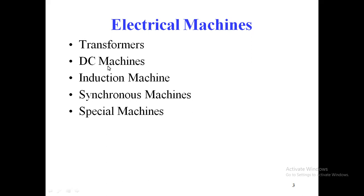After the transformer, we will discuss DC machines, which can be either a DC motor or a DC generator. Apart from DC machines, we will cover the induction machine. Generally, we use the induction machine as an electrical motor, because it is not commonly used as an electrical generator, though in some cases it can serve as one.